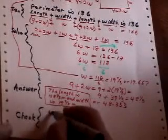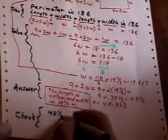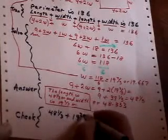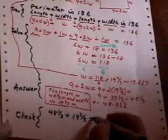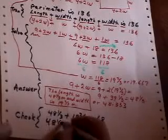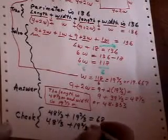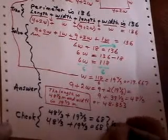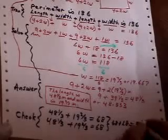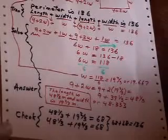If I add up 48 and a third and 19 and two thirds, I end up getting, I get 68. And if I do that again, I obviously get another 68. And together, 68 and 68 is 136. And that's what the perimeter was. So I've got the right answer and give myself a nice happy face.